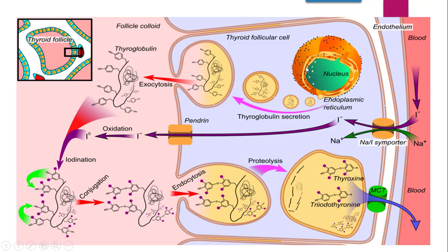The rough endoplasmic reticulum synthesizes thyroglobulin. Once synthesized, it follows the secretory pathway. Thyroglobulin secretion takes place through various secretory pathways — by exocytosis it will be released and will enter the colloid in the lumen of the thyroid follicle. So this process has released thyroglobulin into the lumen.